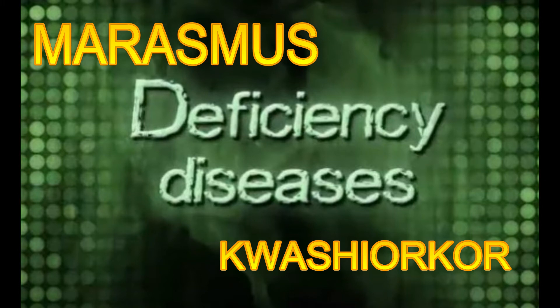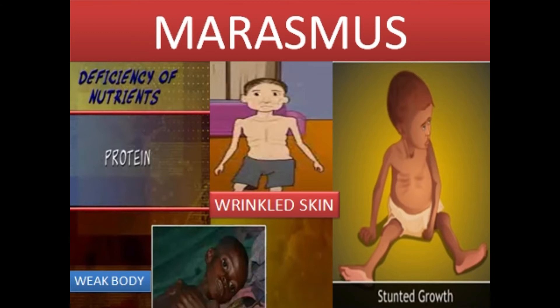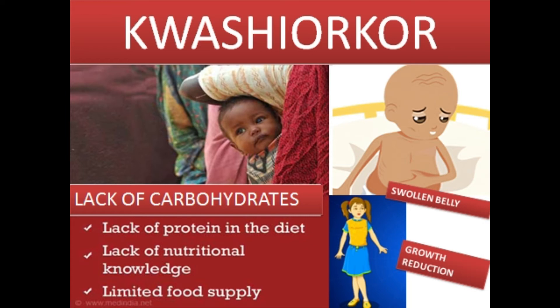A child suffering from malnutrition may have diseases like marasmus and kwashiorkor. A child suffering from marasmus has stunted growth and a weak body. The skin is dry and wrinkled and stomach disorder also occurs. Kwashiorkor is a disease caused by the deficiency of carbohydrates and proteins in the diet of children. A child suffering from this disease has low appetite, swollen belly and reduced growth.